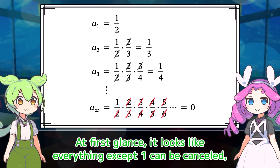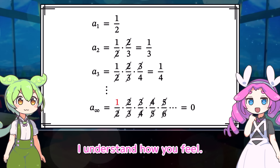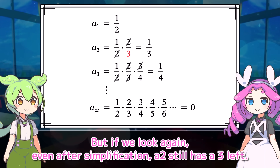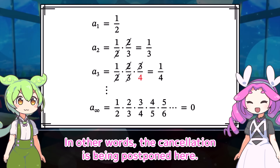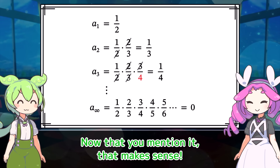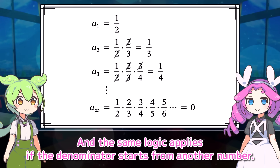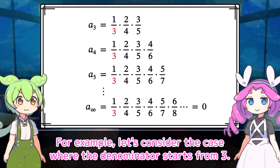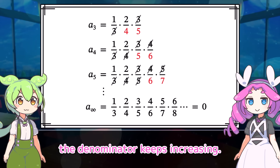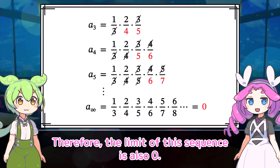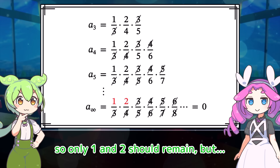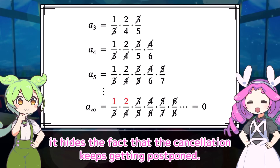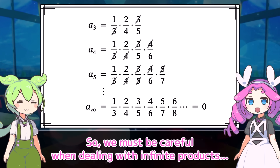That's kind of mysterious. At first glance, it looks like everything except 1 can be cancelled, so only 1 should remain. But if we look again, even after simplification a sub 2 still has a 3 left, and in a sub 3 there's still a 4 left. In other words, the cancellation is being postponed. That makes sense. The same logic applies if the denominator starts from another number — for example, where the denominator starts from 3. As the sequence goes on, the denominator keeps increasing, so the limit is also 0. It feels like everything except 1 and 2 could be cancelled, but when multiplication goes on infinitely, it hides the fact that the cancellation keeps getting postponed. So we must be careful when dealing with infinite products, or infinite cancellation.